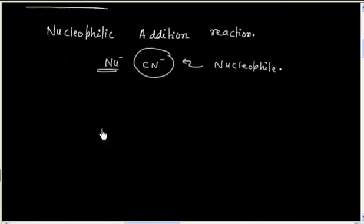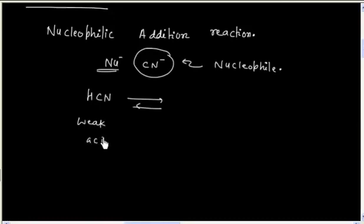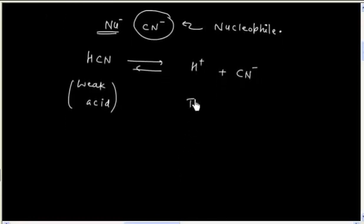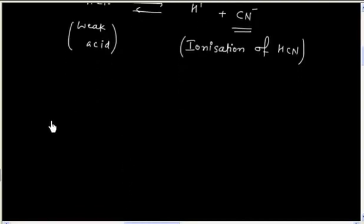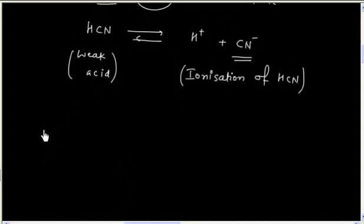We can generate the nucleophile by ionization of the weak acid HCN. HCN is a weak acid and it can ionize to give H⁺ and CN⁻. This is simply ionization. Once we have generated CN⁻, it can react with an aldehyde or ketone.